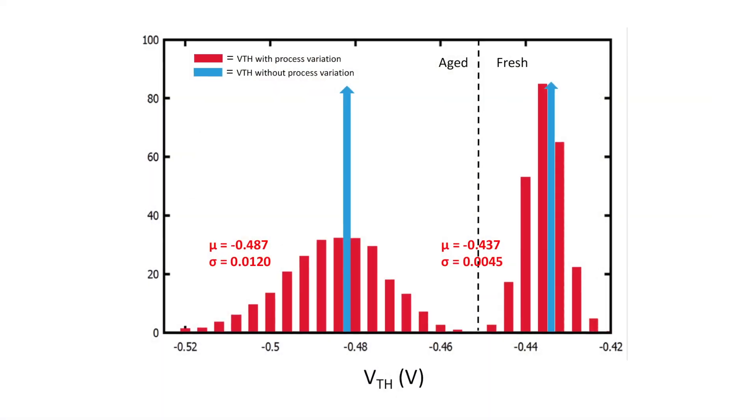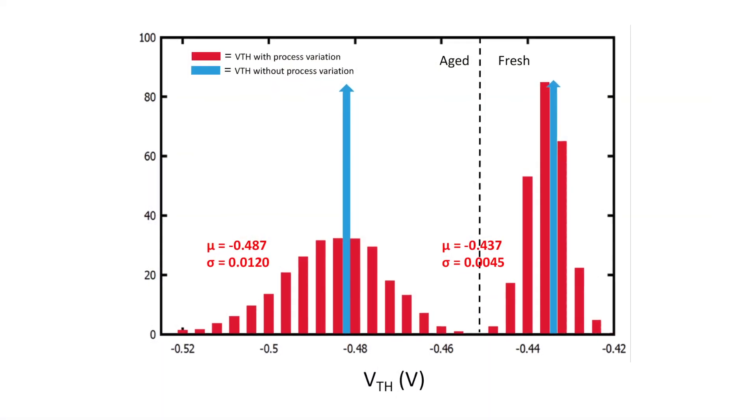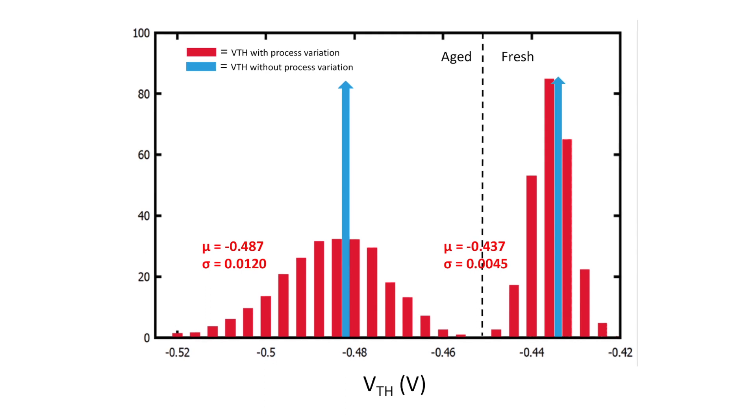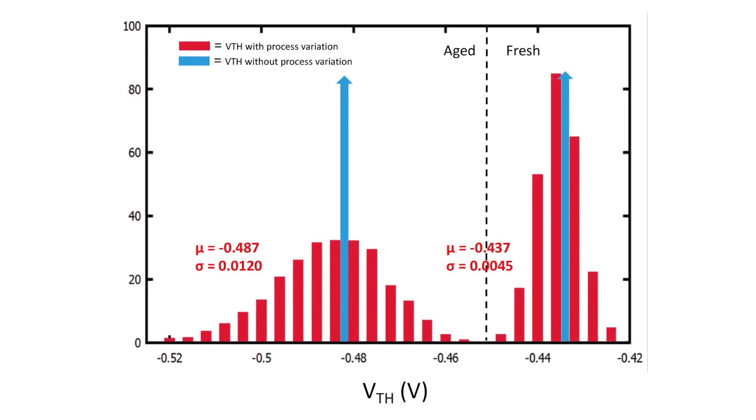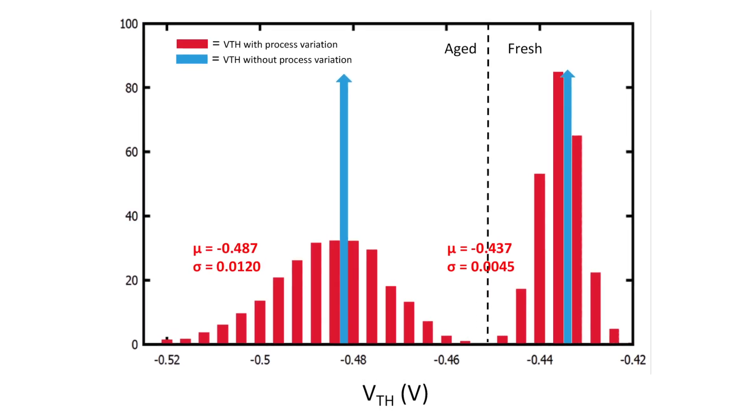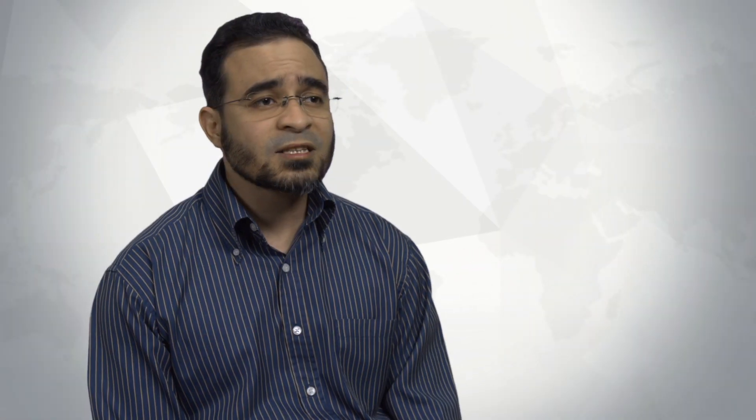In addition to aging models, the analysis needs to account for the effects that impact device aging: electrical stress, temperature, and process variation. The Legato Reliability Solution's advanced aging analysis has been enhanced to better account for these other effects. For example, aging analysis can be used with Monte Carlo analysis to account for process variation.